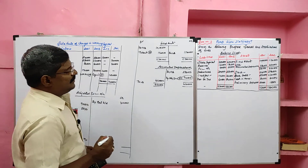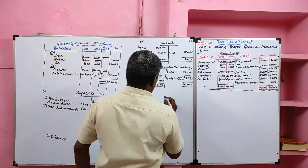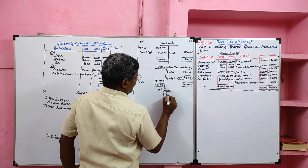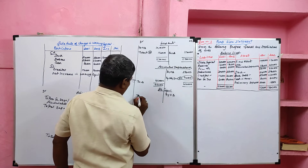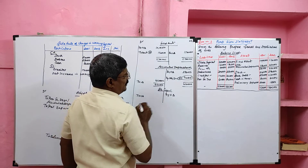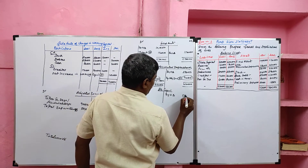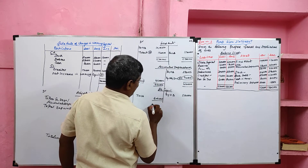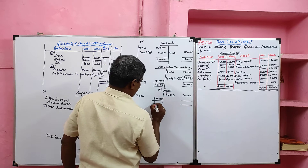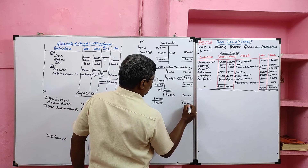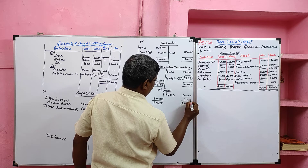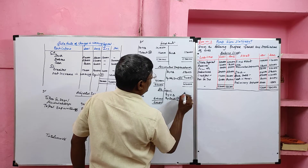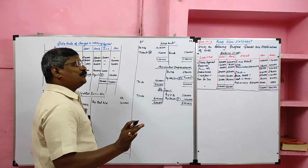Now we take liabilities. First, share capital. It is a liability, so the opening balance is recorded on the credit side and closing balance on the debit side. Opening balance is 5 lakh and closing balance is 6 lakh. Share capital increases - it is a source and will be recorded on the sources side as proceeds on issue of share capital by bank.